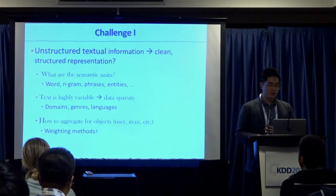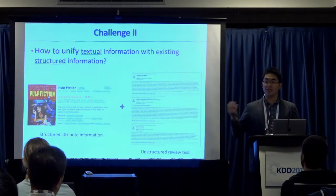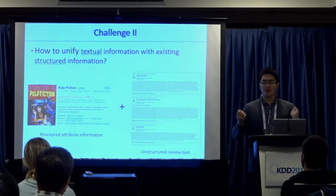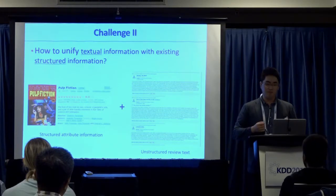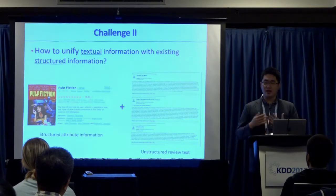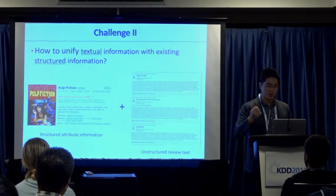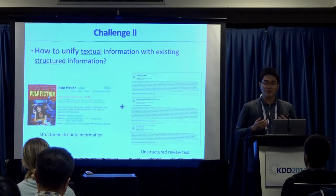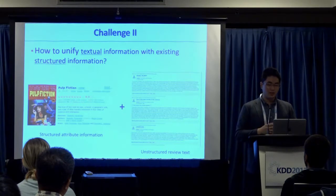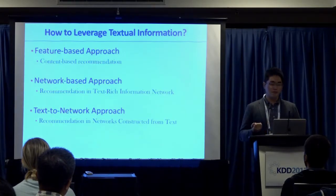The second challenge is that we have existing structures — user-item interactions, social networks, and many other structured data — while text is by nature unstructured. How do you put these two things together? Our answer is to use information networks as the unified form of representation to align these two things.